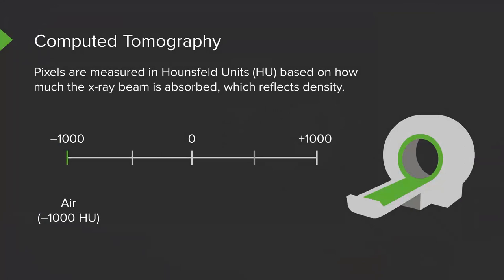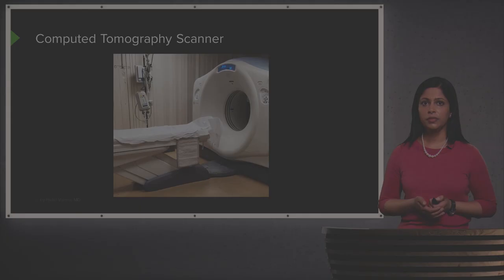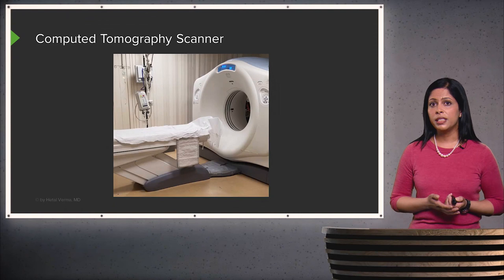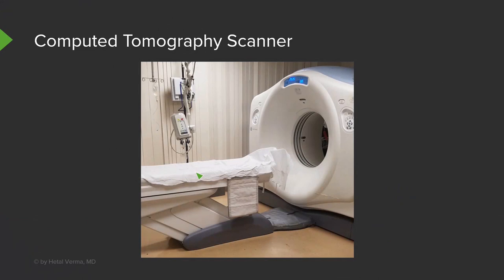Air has the least Hounsfield units, measuring about negative 1,000. Bone is close to the highest, measuring anywhere between 400 and 600 Hounsfield units. These aren't exact numbers and can vary a little by individual. This is an example of what a CT scanner looks like — the patient lies on this table, which goes inside the bore, and the machine rotates to create an image.